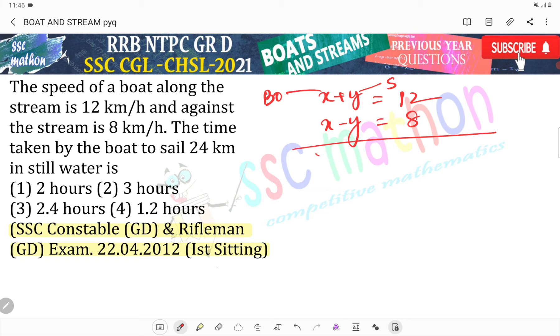Now the boat's speed: 2x equals to 20, so x equals to 10 km per hour. For 24 km distance, the time taken is 24 divided by 10, which equals 2.4 hours.